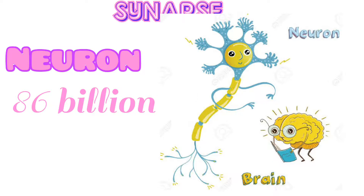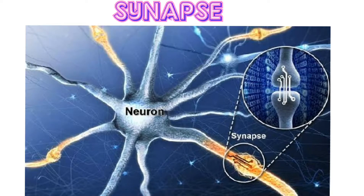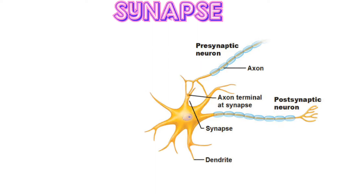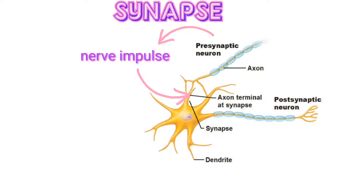Neurons talk to each other across synapses. A synapse is the junction between the axon of one neuron and the dendrite of another, through which two neurons communicate. A presynaptic neuron is a nerve cell that carries a nerve impulse towards a synapse. A postsynaptic neuron carries the nerve impulse away from a synapse, or is an effector cell that responds to the impulse.